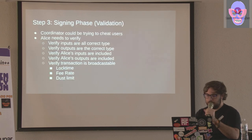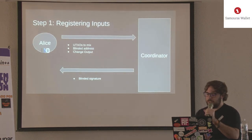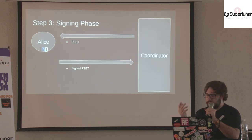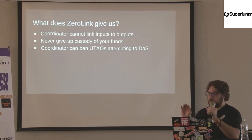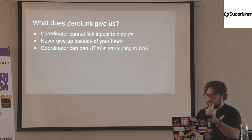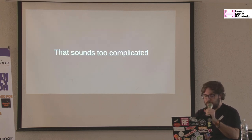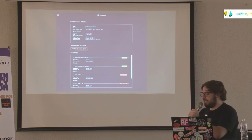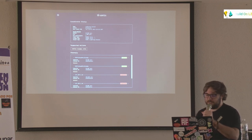If Alice sends UTXOs that don't exist, or a bad address, or she doesn't sign in the signing phase, her UTXOs are banned so she can't come back and DoS attack the round again. That sounds complicated, but there's a GUI that handles it all for you — that's kind of the idea.